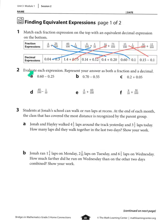Number 2 says evaluate each expression and represent your answer as both a fraction and a decimal. So part a is 60 hundredths minus 25 hundredths. In my head, 60 minus 25 is 35, so the answer is 35 hundredths. As a fraction that's 35 over 100, which simplifies to 7 twentieths.